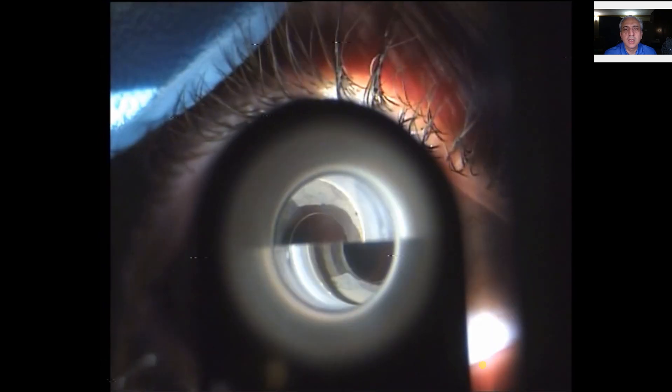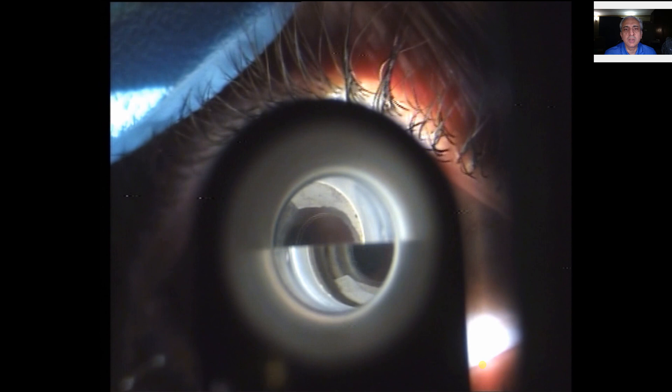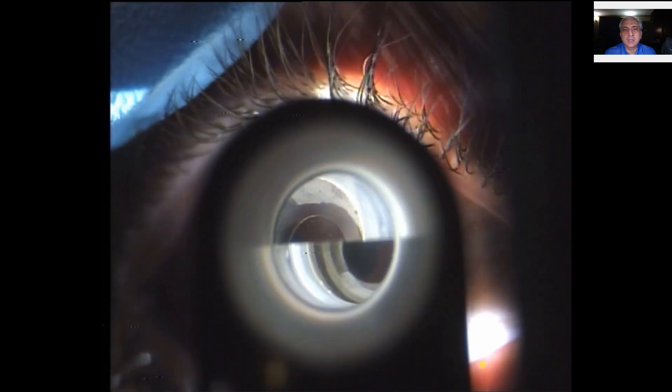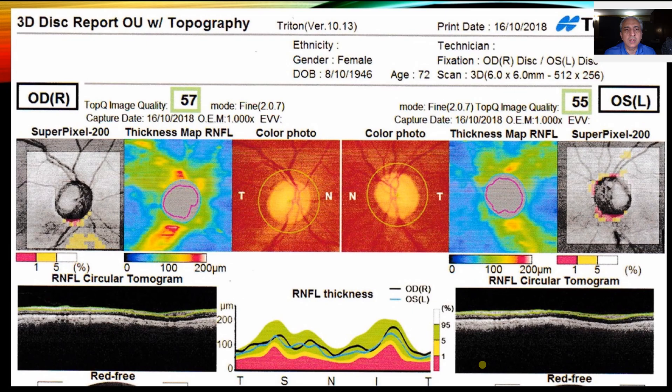I'm going to do tonometry without using fluorescein dye, for which you need to add 2 mmHg to the reading. Here you can see the mires are slightly under, so you rotate the dial on the scale to increase the pressure. Here the mires are just sitting slightly more than inside. Typically it should be inside-to-inside on the Goldmann tonometer when you're doing it with fluorescein.